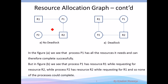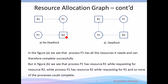Let's look at these examples. Here we have no deadlock. Process one is assigned resource one and two, meaning it has the two resources it needs to complete. Process two is requesting for resource two, and process one is not requesting for anything. Meaning process one can complete successfully, release resource two, and allow process two to use resource two. No deadlock here.